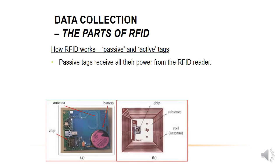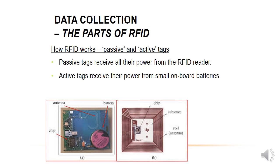There are tags with batteries and tags without. Those with batteries are called active tags, and those without are called passive tags. Passive tags receive all their power from the RFID reader and must be near a reader to send data back. Active tags receive power from small onboard batteries and can communicate over greater distances.